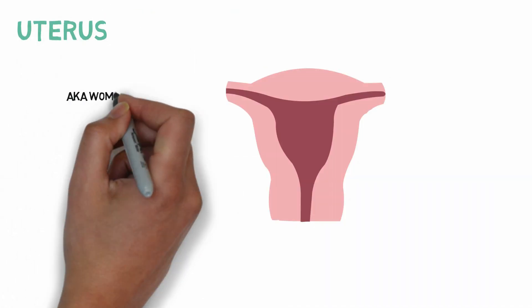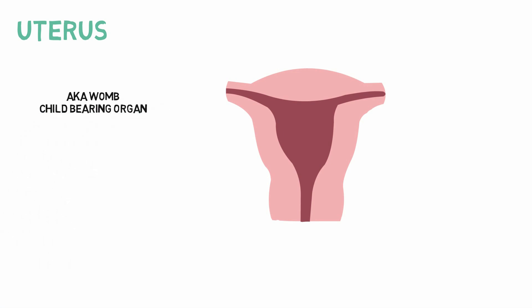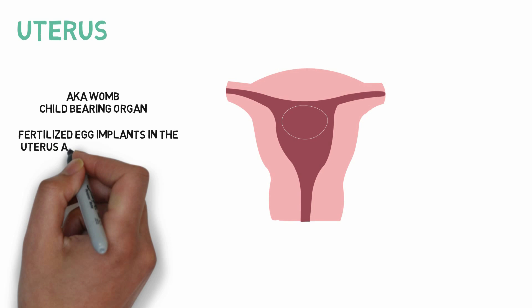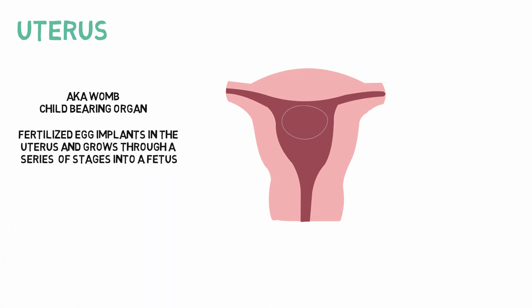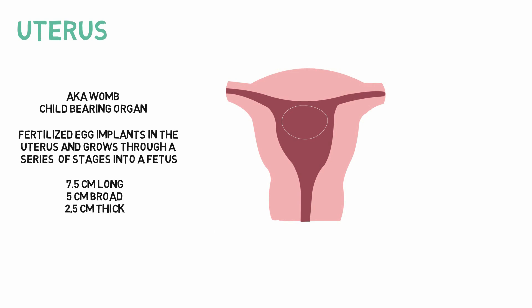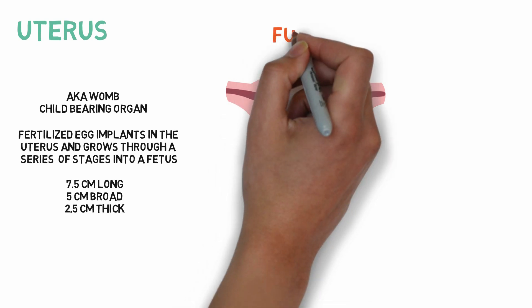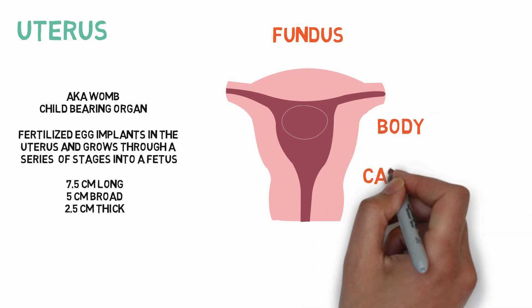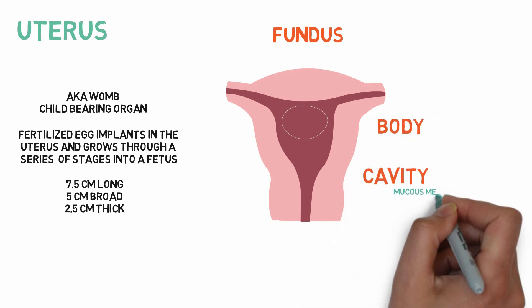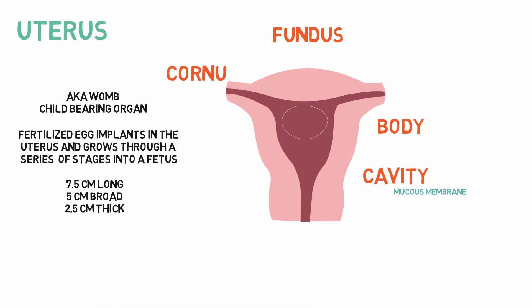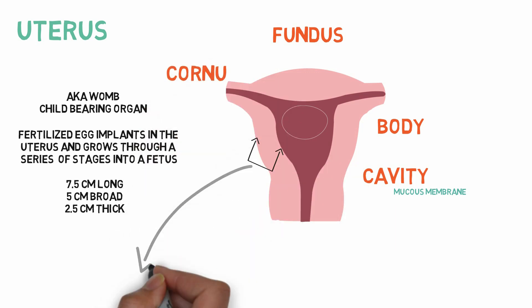The uterus, also known as the womb or child-bearing organ, is where the fertilized egg implants and grows into a fetus. It is 7.5 centimeters long, 5 centimeters broad, and 2.5 centimeters thick. It is made up of the fundus, the body, the cavity of the uterus lined by mucous membrane, and the cornua — the corners to which the fallopian tubes are attached.